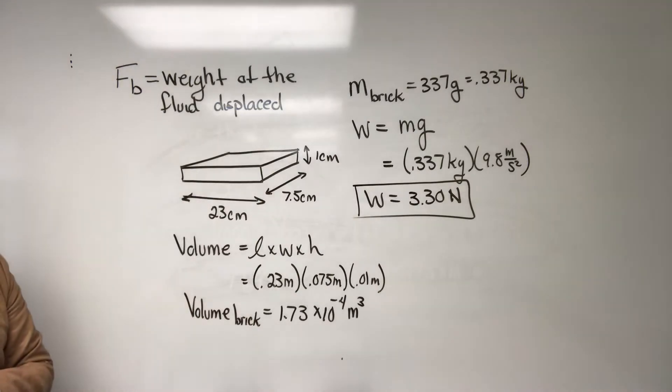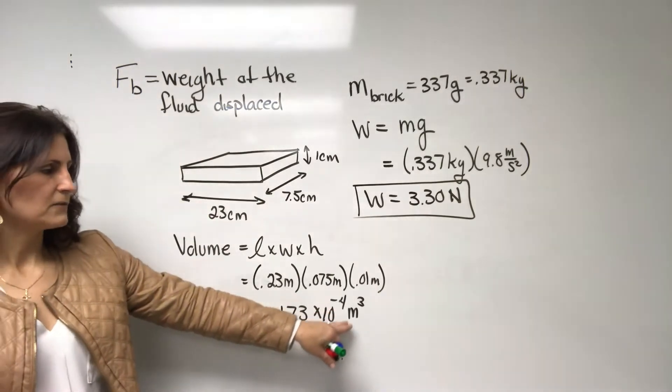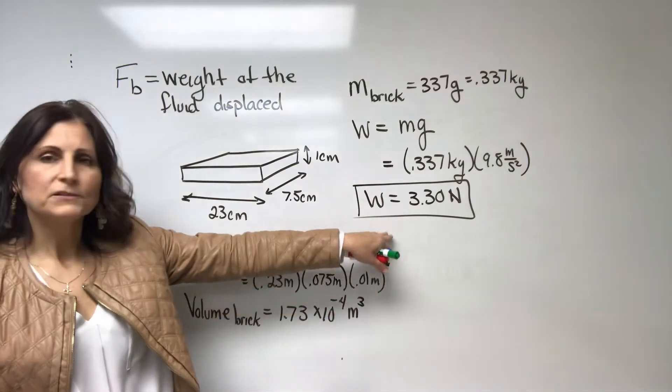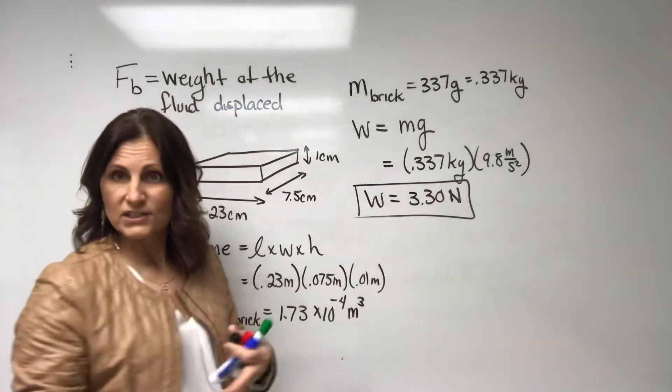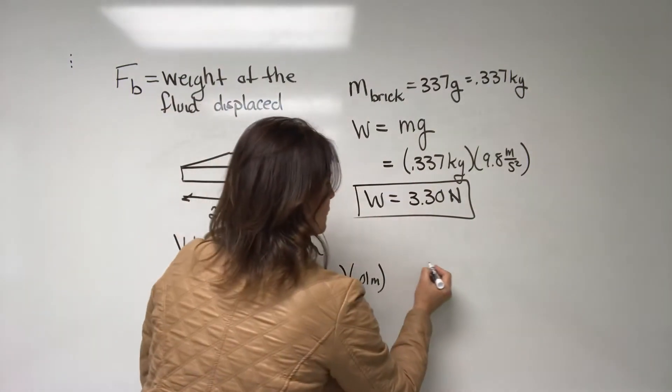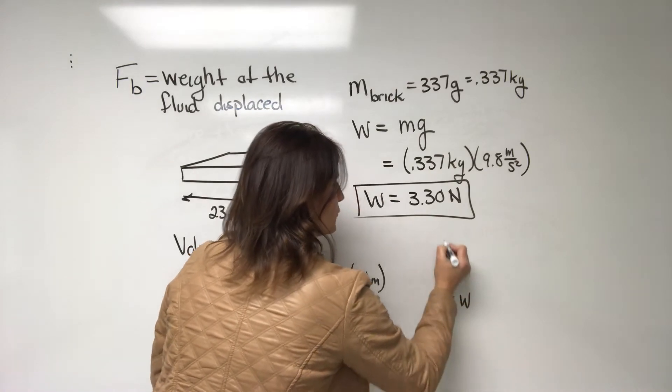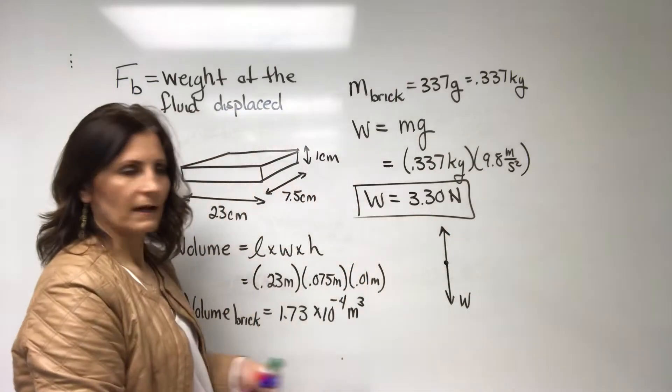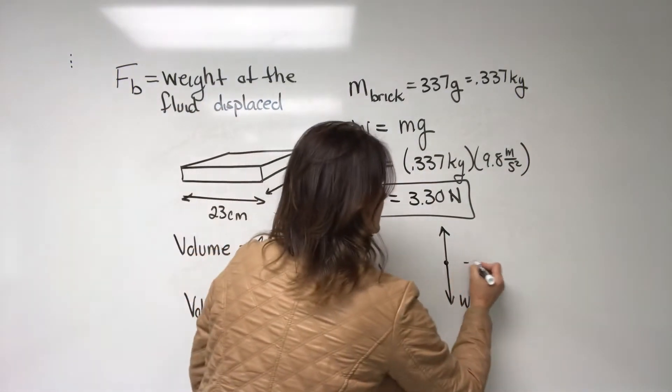Okay. The volume of the brick is 1.73 times 10 to the minus 4 meters cubed. For this brick to float, right, if I were to put it into anything, for it to just sit on the table, the forces that would be on the brick, you need weight, and then you would need an upward force of some kind so that the two are equal to each other, right? So if you want this to be balanced.